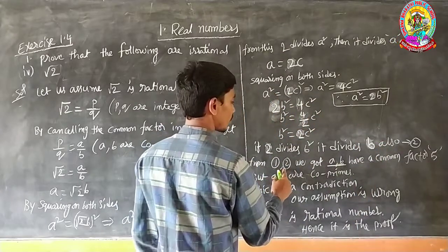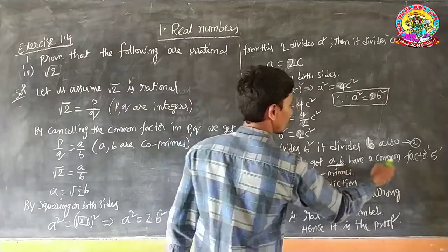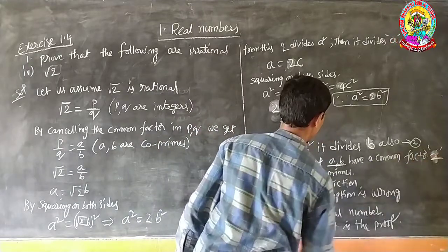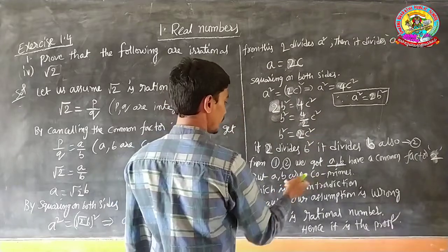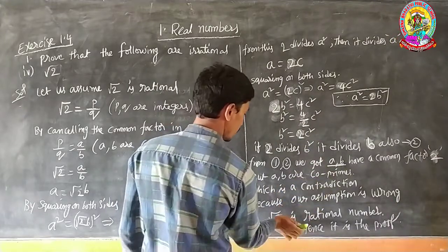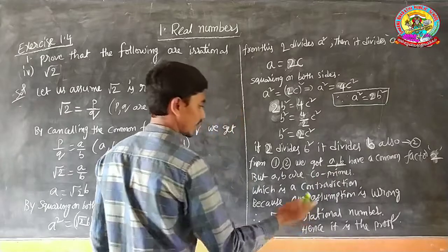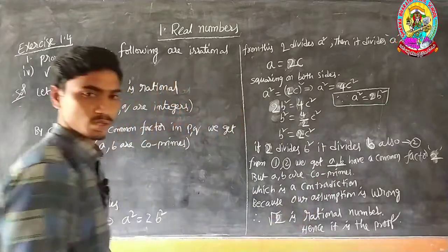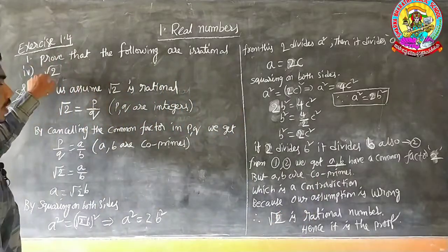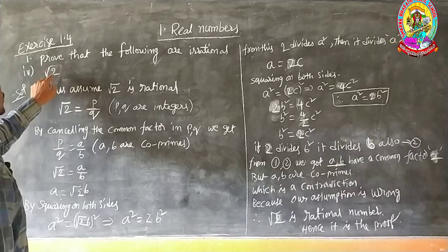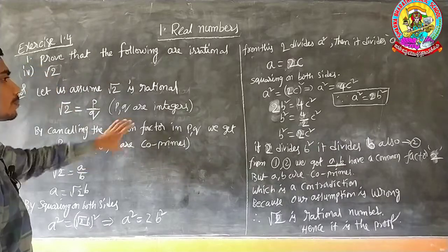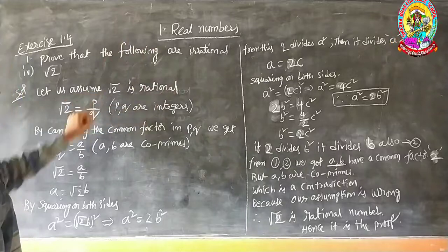From statements 1 and 2, A and B have a common factor of 2. But A and B are co-primes, which is a contradiction. Therefore root 2 is irrational. So any irrational number given — whether root 2, root 3, root 5, root 7 — whatever it may be, you can easily prove using the same procedure by changing the number.